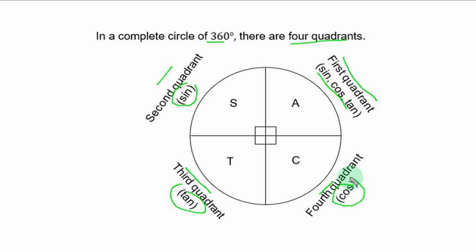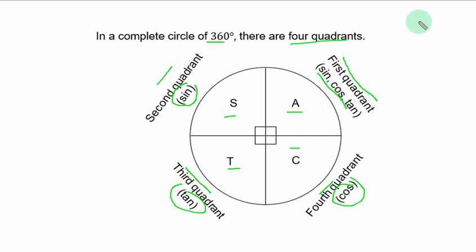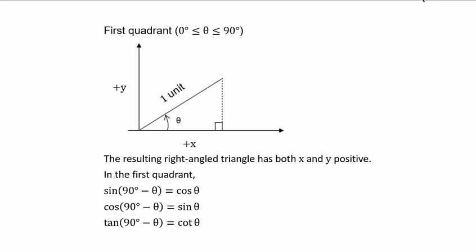You simply use the word ACTS to remember the four quadrants. When you are going in clockwise direction, that is from left to right, after the first quadrant you have the fourth quadrant, then the third quadrant, and then the second quadrant — using the word ACTS.